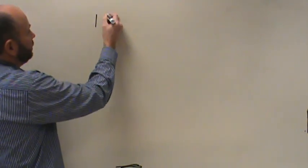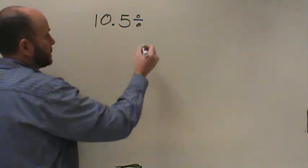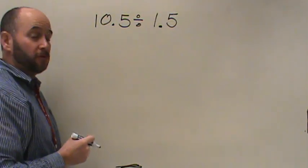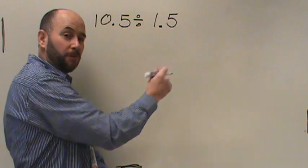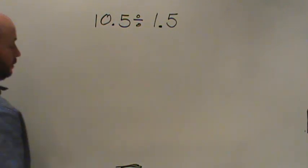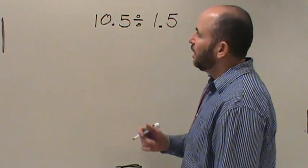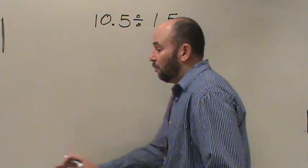Let's try a problem on your own. I'm going to give you the problem — let's go with 10 and 5 tenths divided by 1 and 5 tenths. Why don't you set that problem up and give it a try. I will pause the video and be around to help you. Alright, here we go. If you haven't finished, you can just jump in when you have. If you have finished, follow along and correct as we go. Our problem is 10 and 5 tenths divided by 1 and 5 tenths.